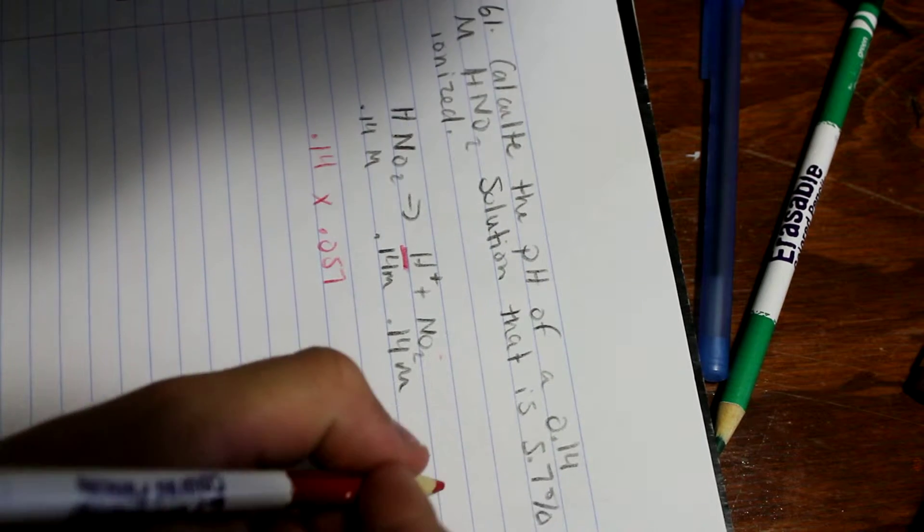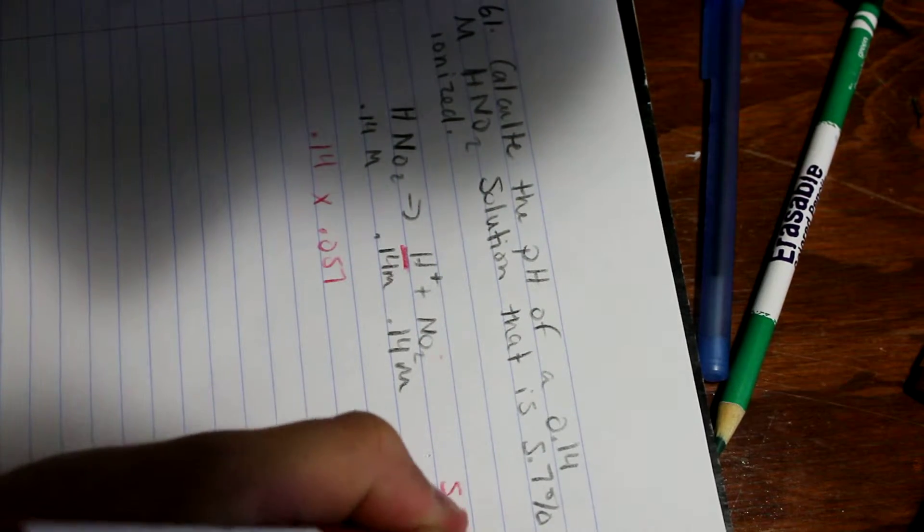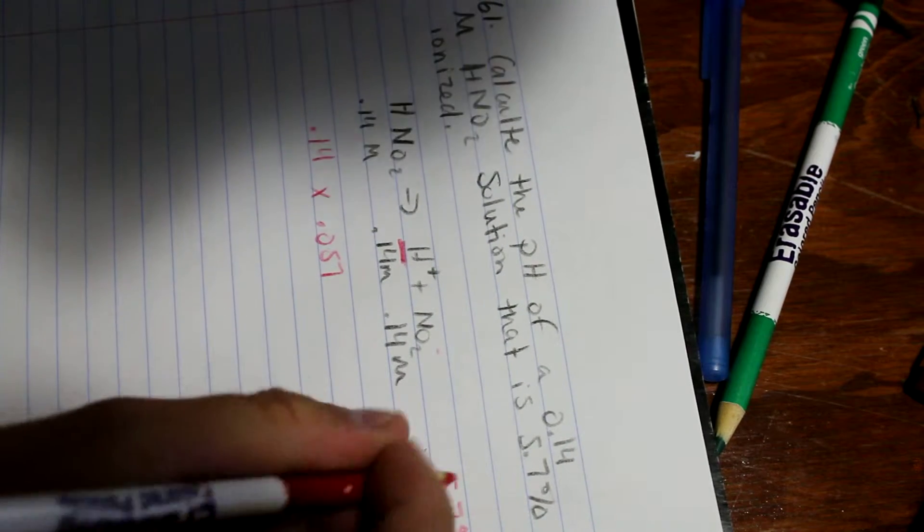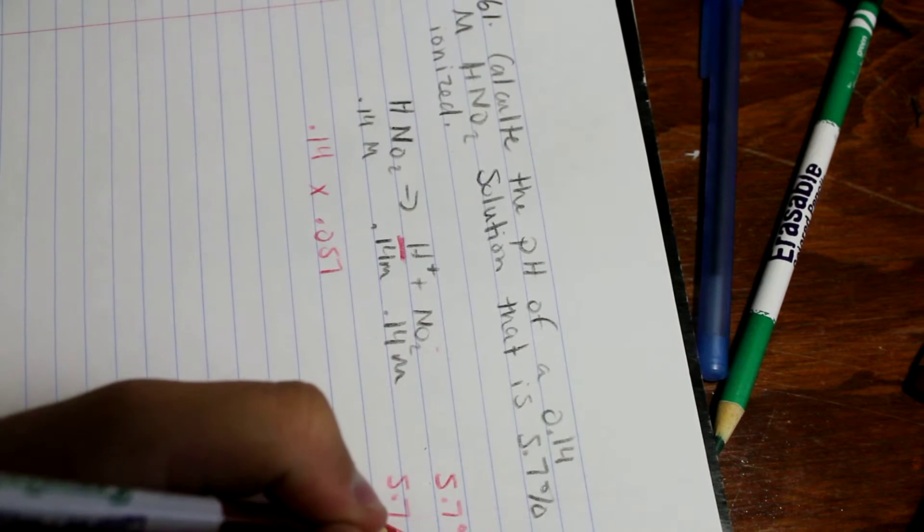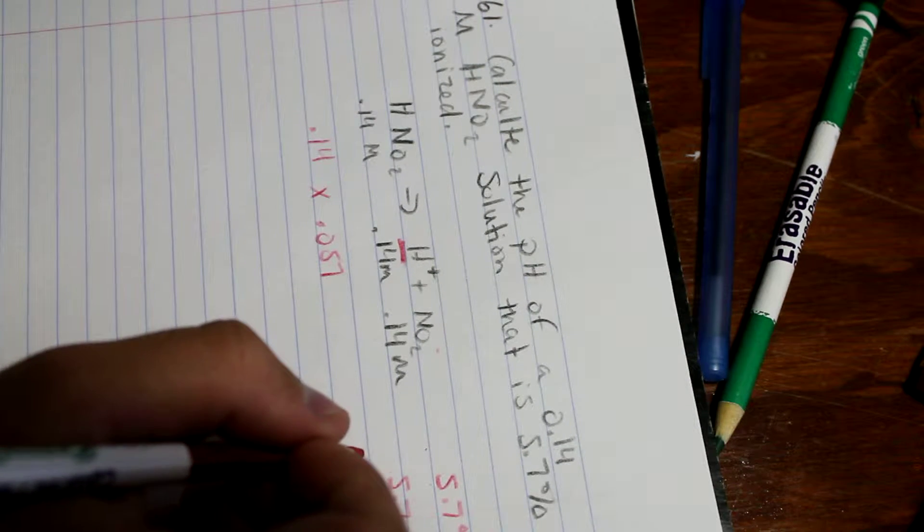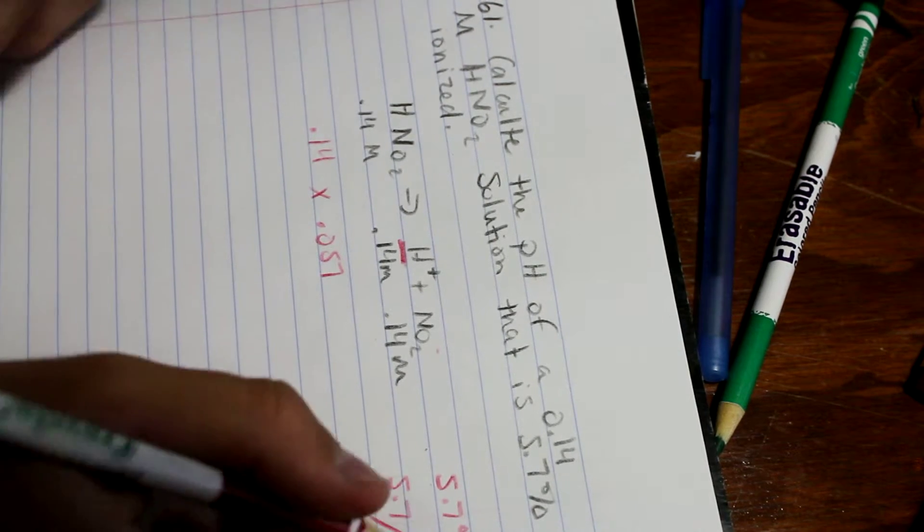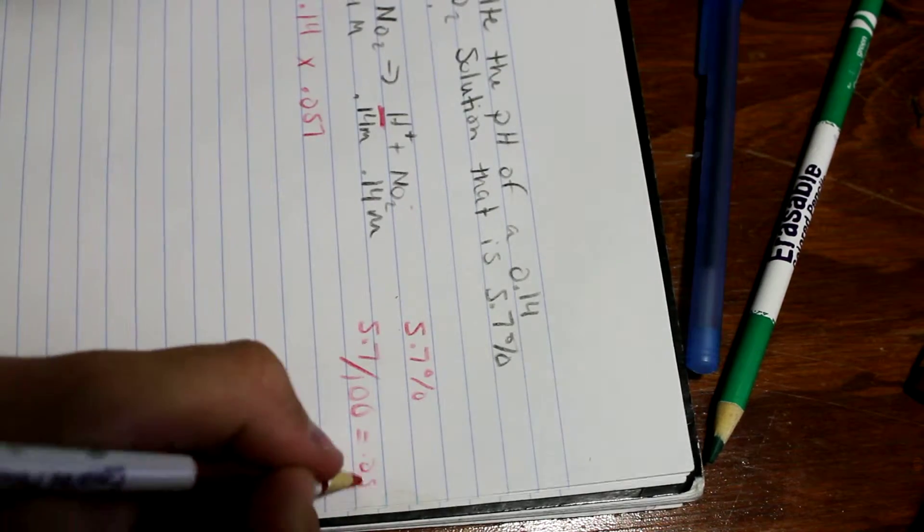And then we're going to convert 5.7% into decimals. So we divide 5.7 by 100, which is equal to 0.057.